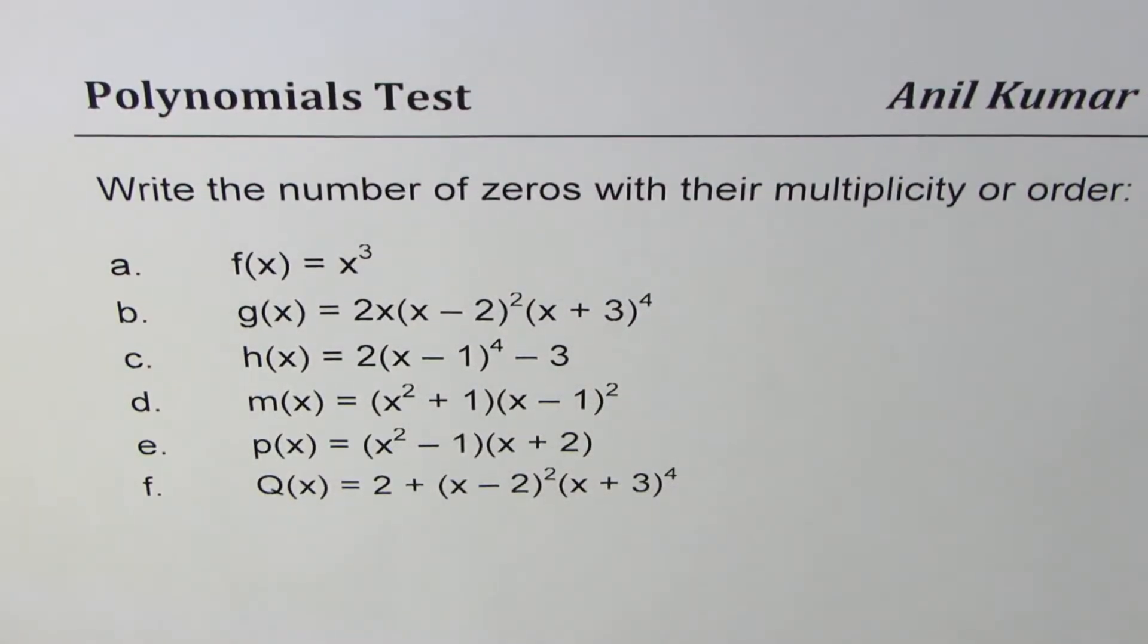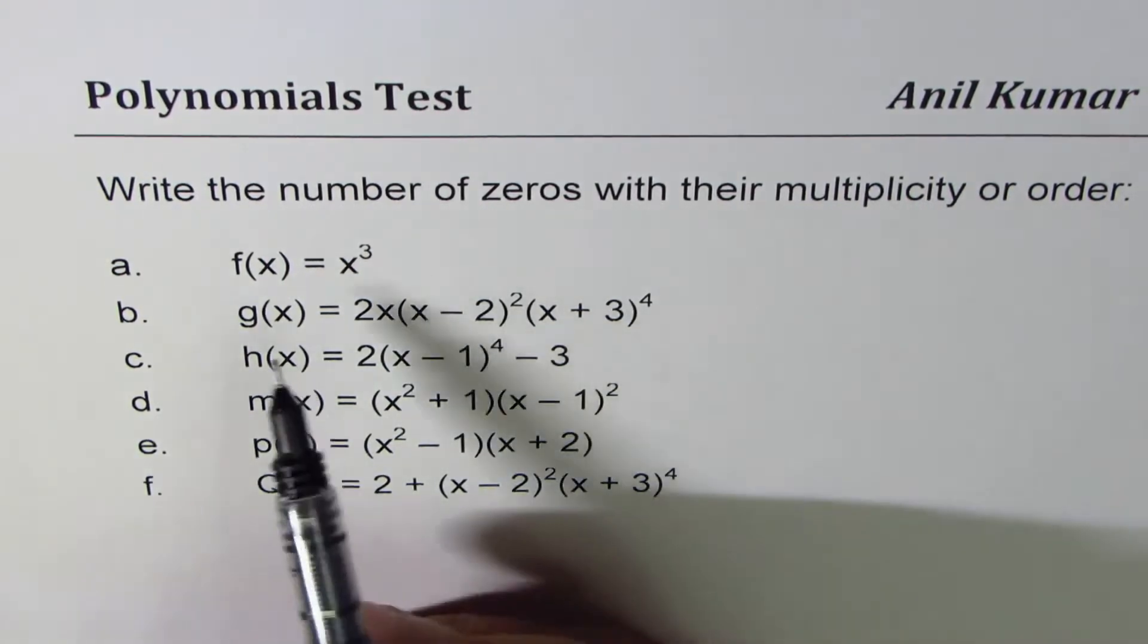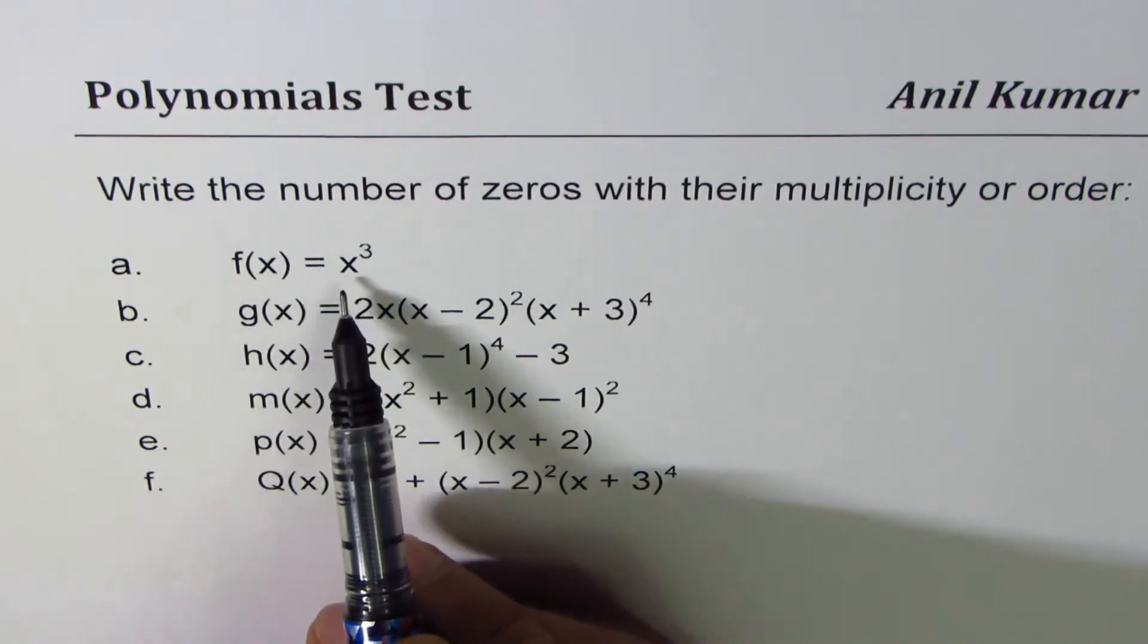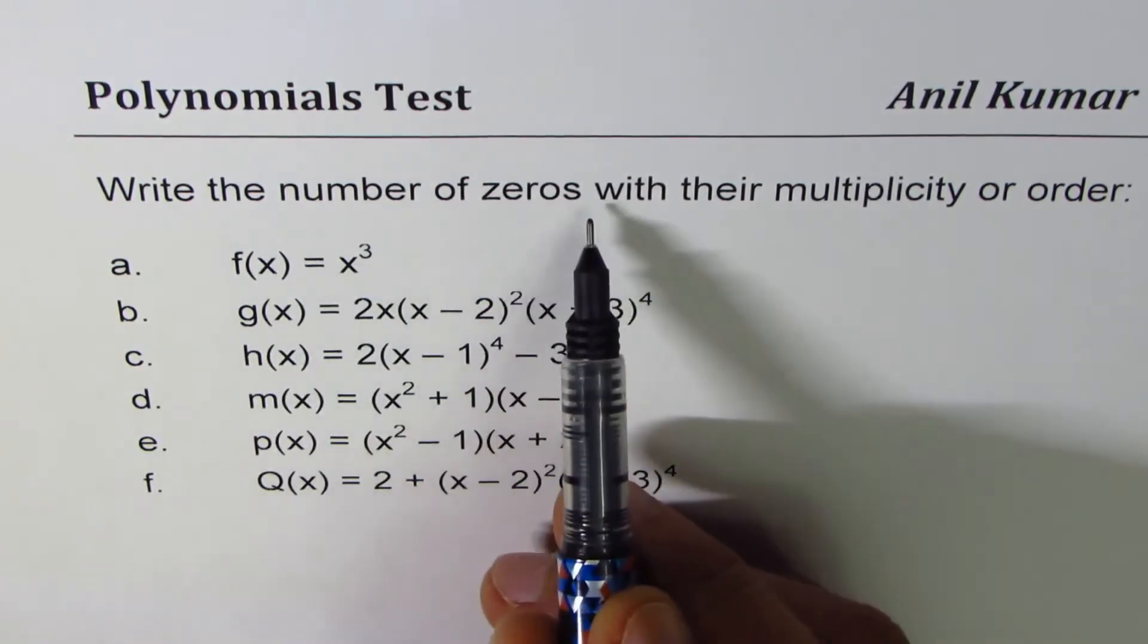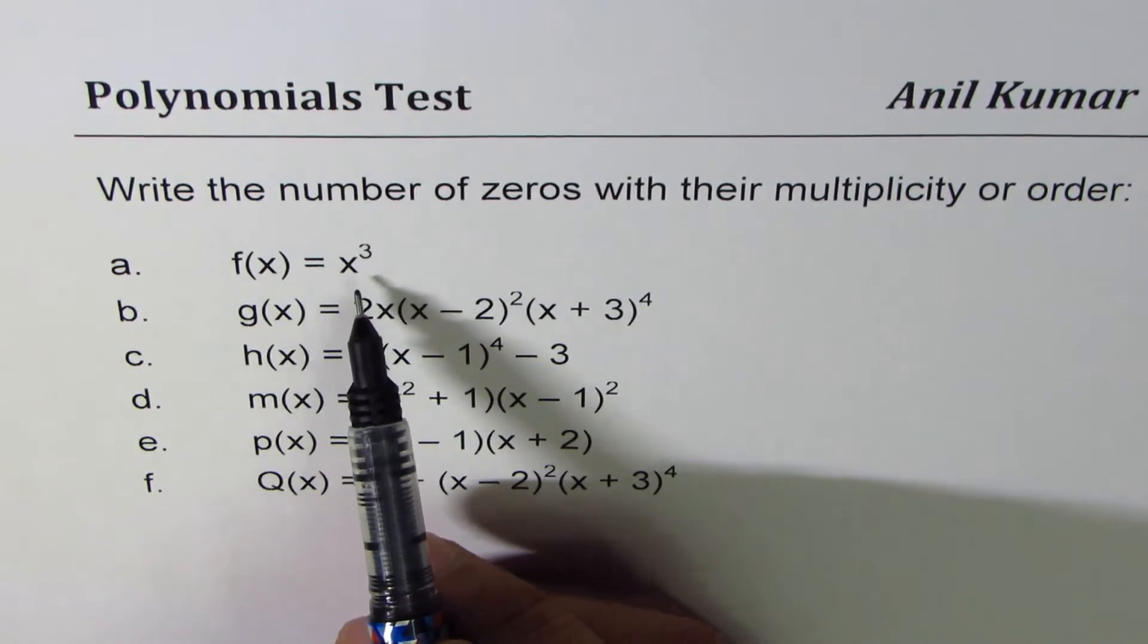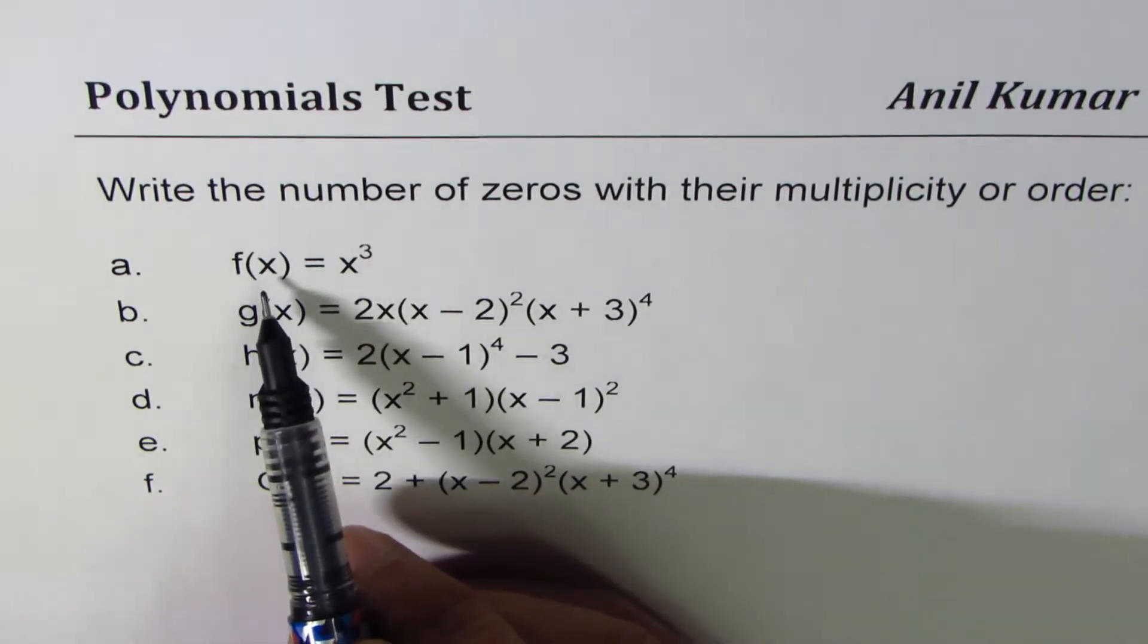I am Anil Kumar and in this video we'll see how to count the number of zeros from the given equation. f(x) = x³. Zero really means the value of x which can get result into zero value.